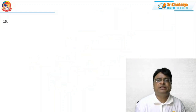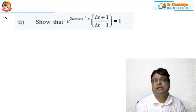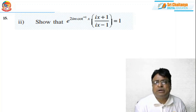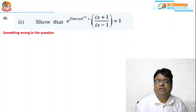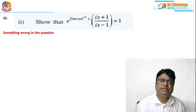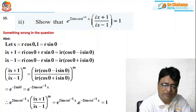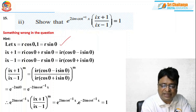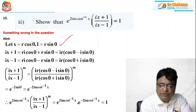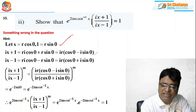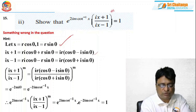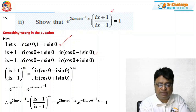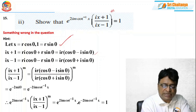Coming to the 15th second problem. Again something is wrong in the question — M seems to have been missed in the statement. I have taken X = R cos θ and 1 = R sin θ. Conveniently, iX + 1 is constructed as a complex number: iX - 1 = iR(cos θ + i sin θ), so the expression (iX+1)/(iX-1) raised to power M simplifies using these substitutions.